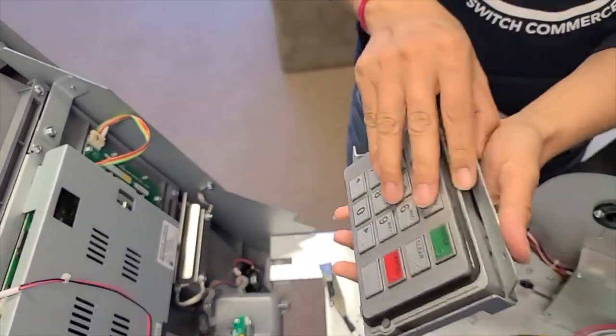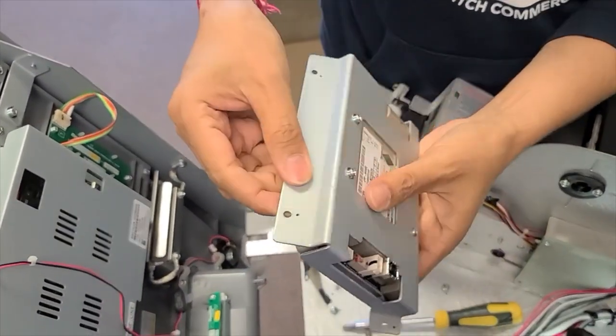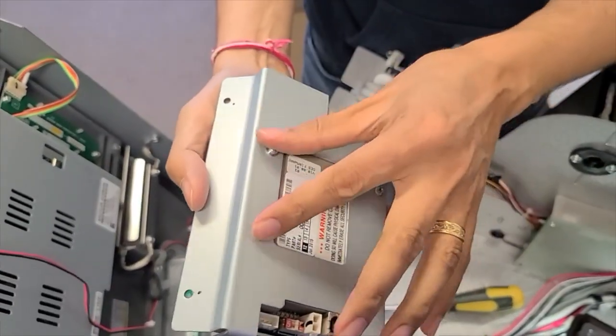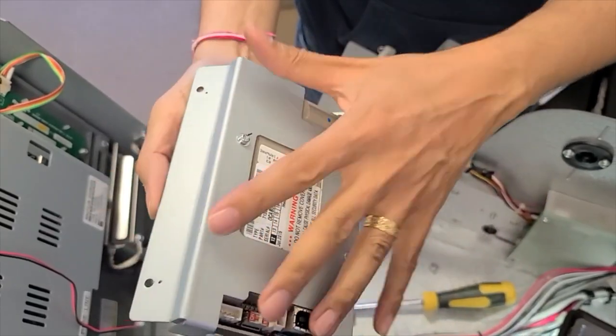Now, your keypad may not come with the bracket. So if you're going to get just the keypad, you may want to just unscrew these four screws and put the bracket onto the new keypad.